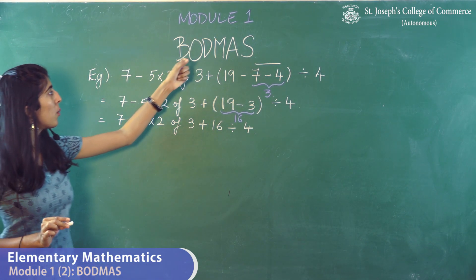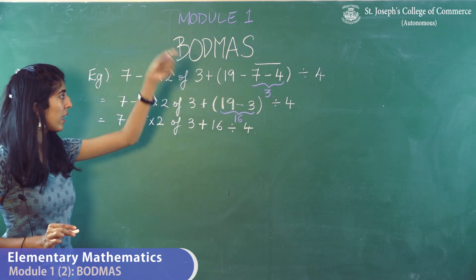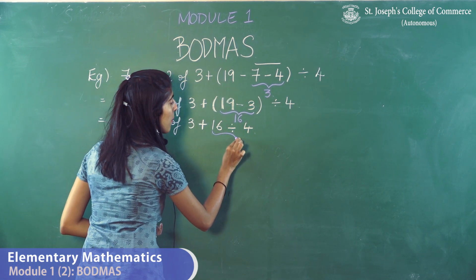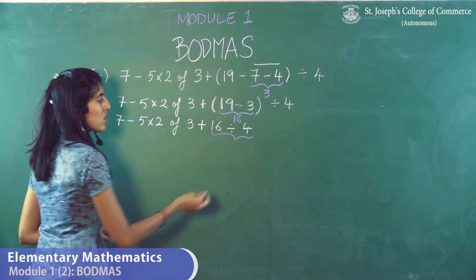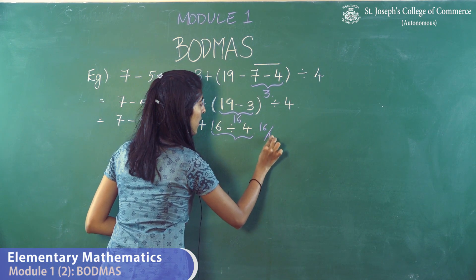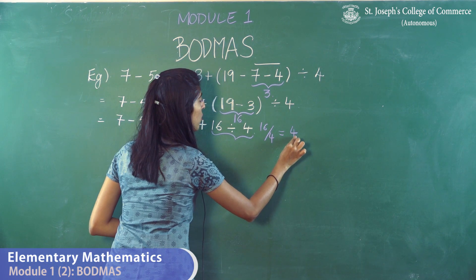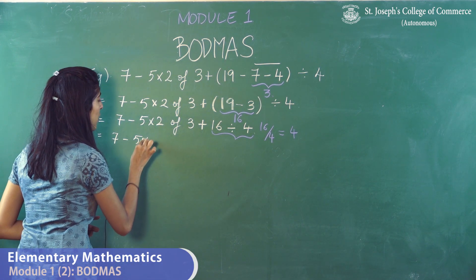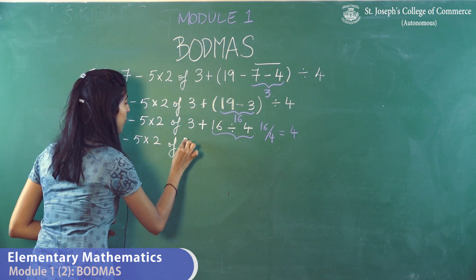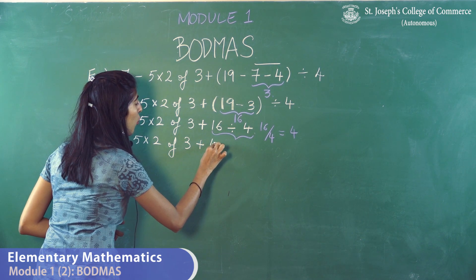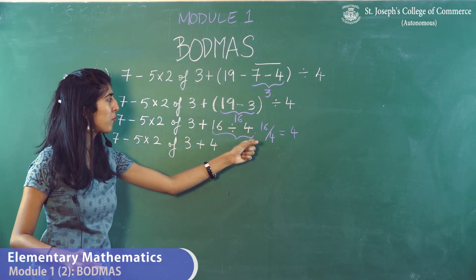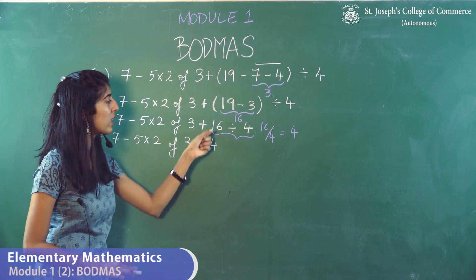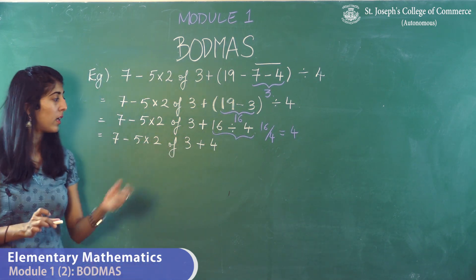B is complete. O isn't present in the sum. The next step is division. Only 16 divided by 4 has a division sign, so we solve that: 16 divided by 4 equals 4. We rewrite the equation as 7 minus 5 into 2 of 3 plus 4.